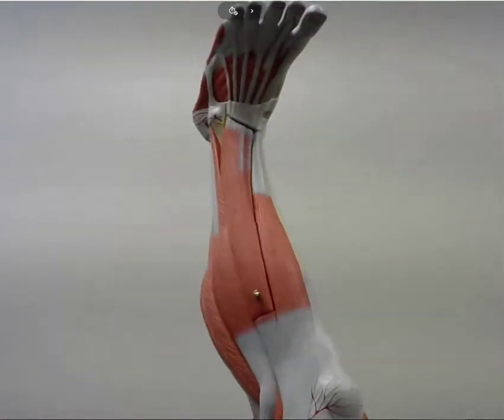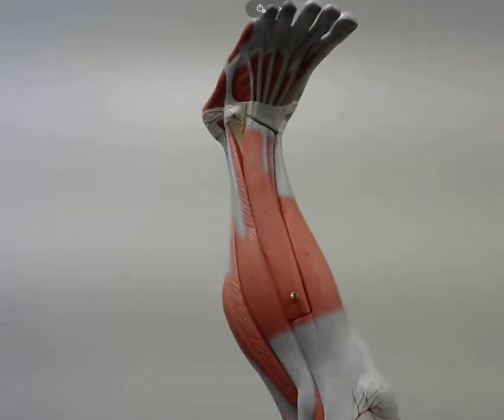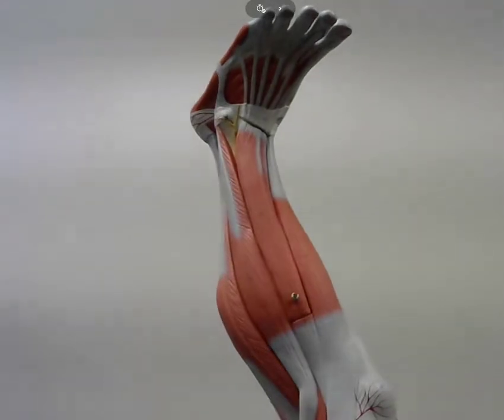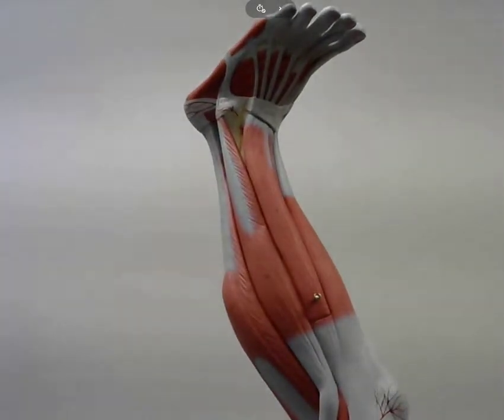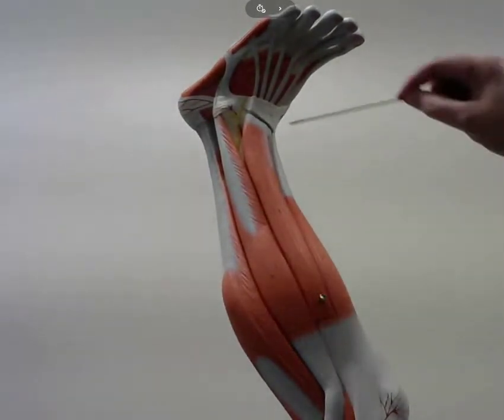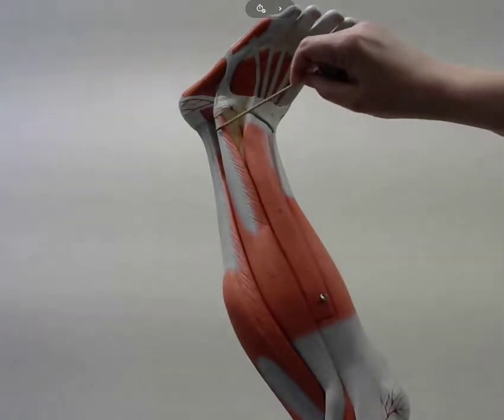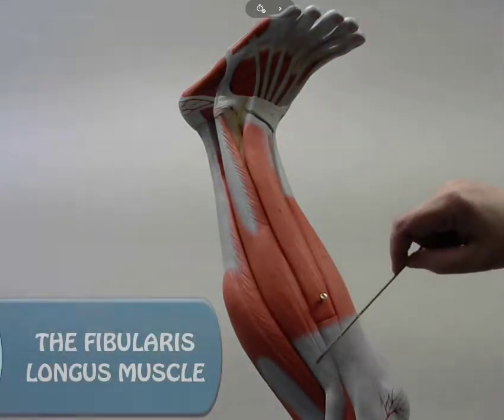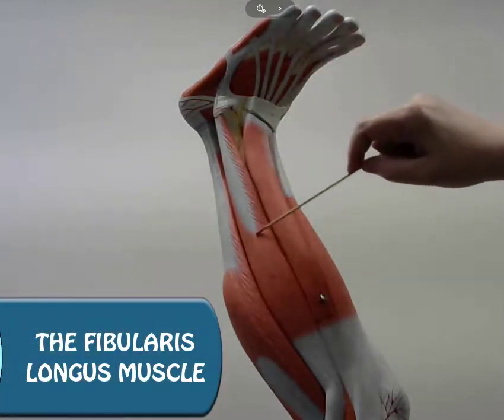We have another bone that lies laterally to the tibia, which is the fibula. And the fibula has a muscle associated with it as well. So this is the fibularis longus. The fibularis longus.